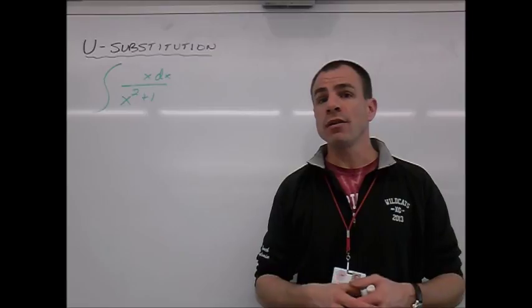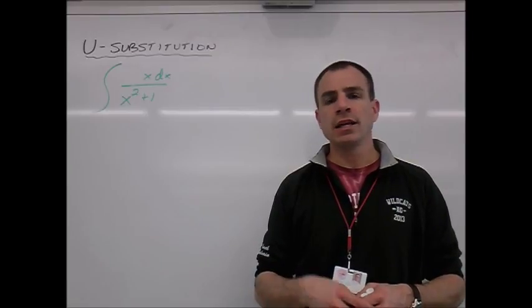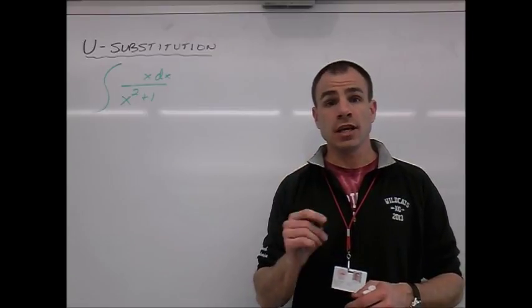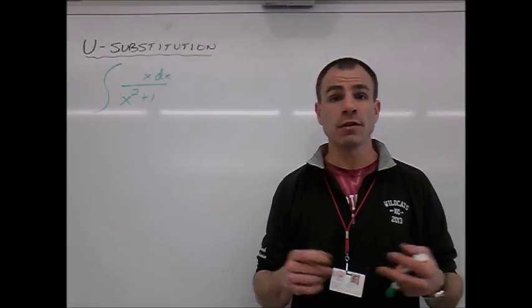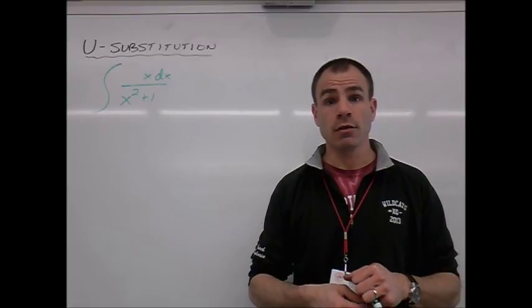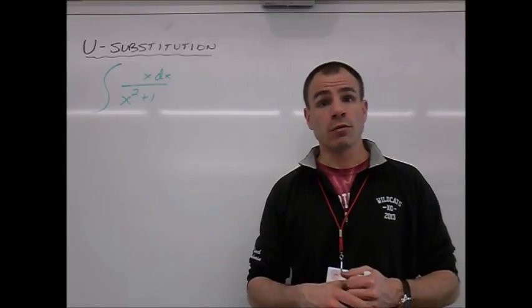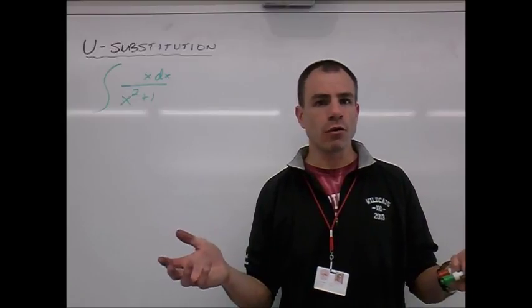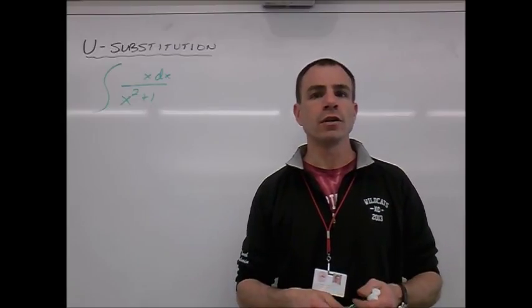And the only one that worked out in that regard was when we had 1 over x dx. Remember, 1 over x's antiderivative was the natural log of the absolute value of x. That's what we're going to have to work with here, except that instead of having 1 over x, we're looking to have 1 over u.